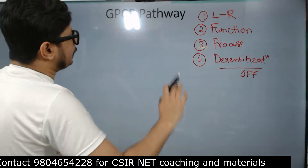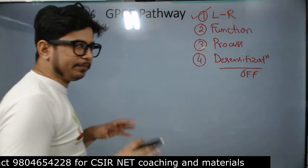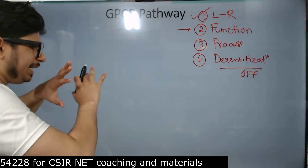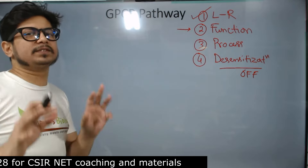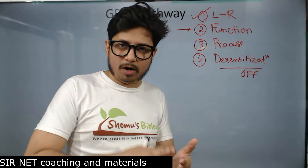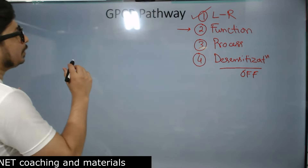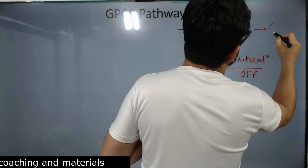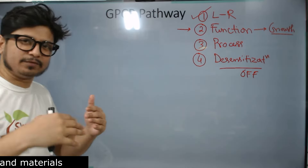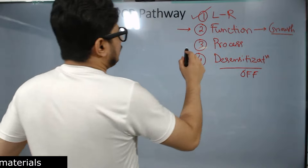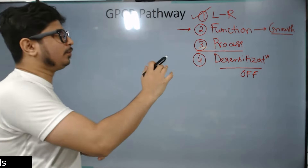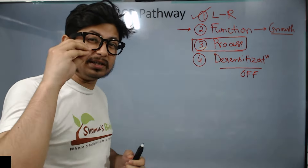In this GPCR pathway, we know about the ligand and receptor. The second thing we need to understand is the function of this pathway. Any cell signaling pathway either helps the cell to grow, divide, improve the cellular metabolism, or causes the cell to die. GPCR pathway leads to growth of the cell. Now the third thing we will talk about is the process — this is the most important, mechanism-based topic which you need to understand very carefully.